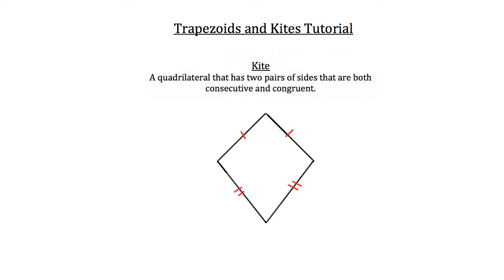A kite is a quadrilateral that has two pairs of sides that are both consecutive and congruent. So take a look at these two sides on top and bottom. They're consecutive, meaning they're touching each other, they're adjacent to each other, and they're congruent to each other. So that's one pair, and you can see that on the bottom pair of sides as well, that they're touching each other and they're congruent to each other.